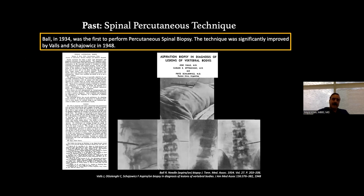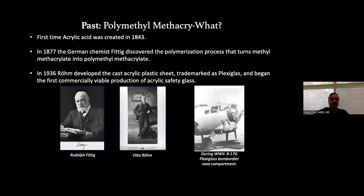Going back into the history of percutaneous spinal procedures — in 1934, Ernest Ball was the first person who started doing image-guided procedures. Looking at his diagrams, he came infrapedicular along the inferior aspect of the neural foramina to avoid the nerve. We now mostly try to come transpedicular, but the technique has remained essentially the same since 1934.